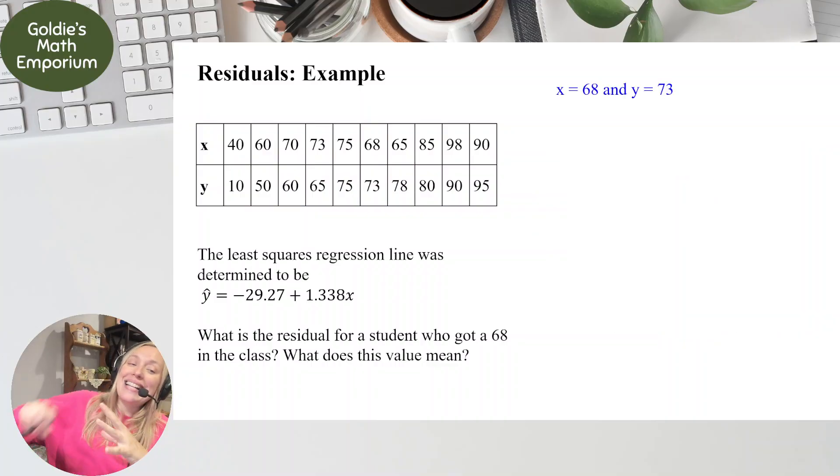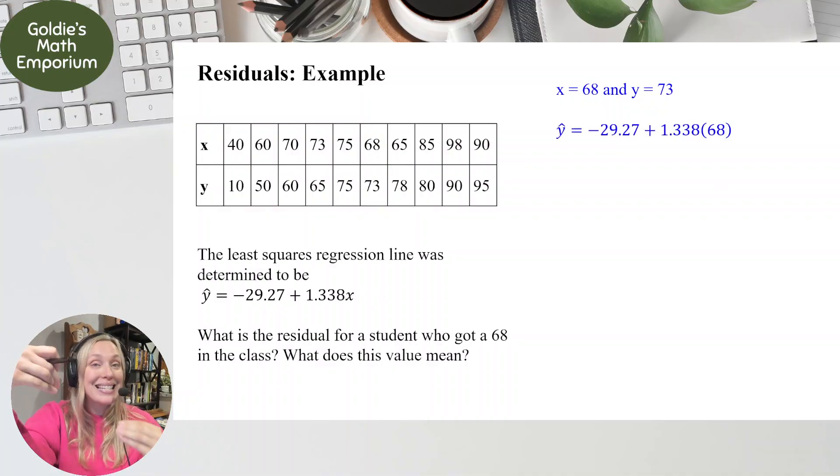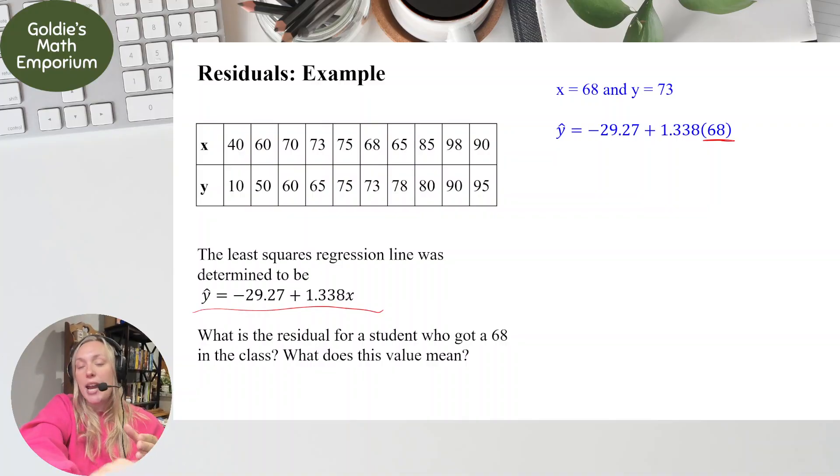So if a student got a 68 in the class, that represents our x. Now if we go to our data, we see a student got a 68 in class. They gave the teacher a 73 on the teacher's evaluation. So we're going to find the residual. We have the observed value already. We observed a 73. Let's see what our line predicted we would get, and to do that, we actually plug the 68 into our least squares regression equation. Plug the 68 in for x, multiply it by 1.338, add the negative 29.27, and we would have predicted that the teacher evaluation would be y hat equals 61.714.